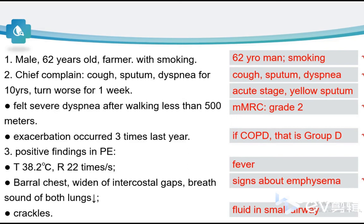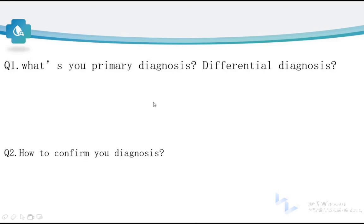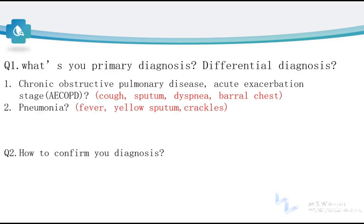We need to determine whether there are additional diagnoses that would explain the yellow sputum, fever, and crackles in both lungs. The most probable additional diagnosis is pneumonia. Therefore, our suspected diagnoses include AECOPD and pneumonia. For differential diagnosis, we need to exclude asthma and left heart failure for this patient.